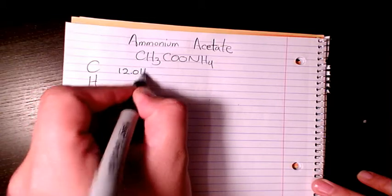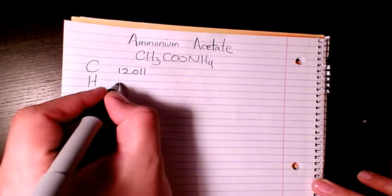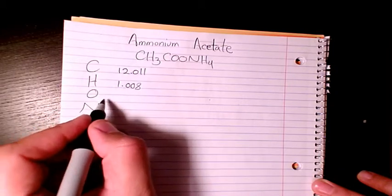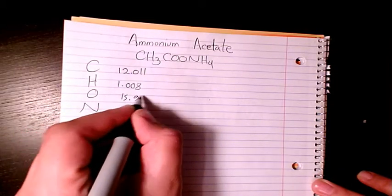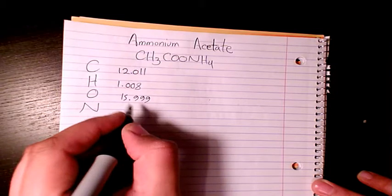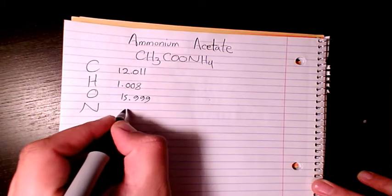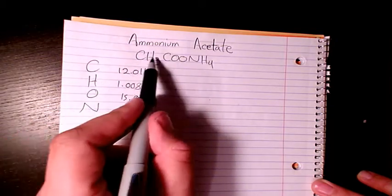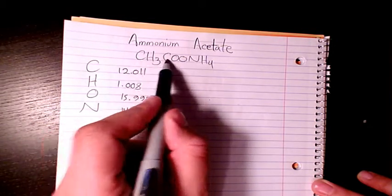The atomic mass of carbon is 12.011, hydrogen is 1.008, oxygen is 15.999, and nitrogen is 14.007. How many atoms of carbon do we have? We have two.